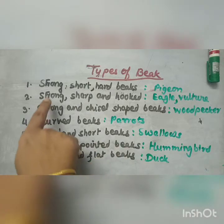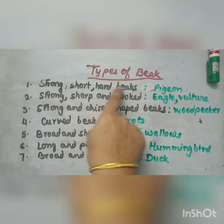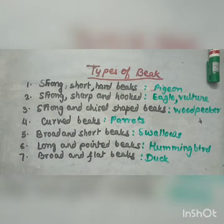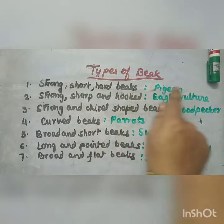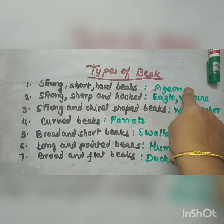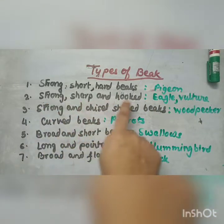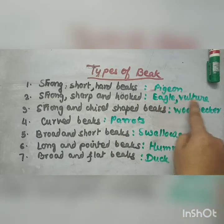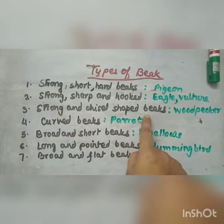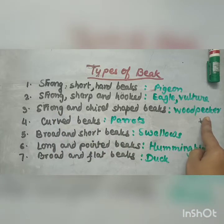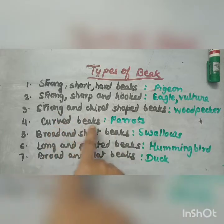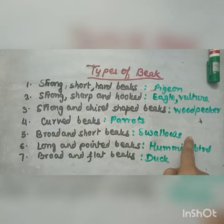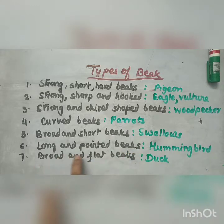First are strong, short and hard beaks, seen in pigeons. Strong, sharp and hooked beaks are seen in eagle and vulture. Strong and chisel-shaped beaks are found in woodpeckers. Curved beaks in parrots. Broad and short beaks in swallows. Long and pointed beaks in hummingbirds. Broad and flat beaks in ducks.